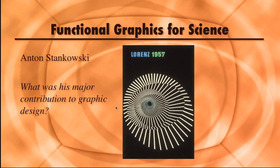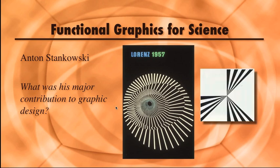Talking about functional graphics for science, we start with Anton Stanikowski, a graphic designer innovative in photography, photomontage, and darkroom image manipulation. He experimented with close-up photographs of common objects whose texture and detail were transformed into abstract images. In this first image, a calendar for Standard Electric, the lines move in a radial pattern signifying transmission and radiation using the client's radio and telephone products. The second image is a trademark for Standard Electric; the lines stand for communication, transmission, and reception. Notice the asymmetrical balance in both images. Do some research and tell me what was his major contribution to graphic design.